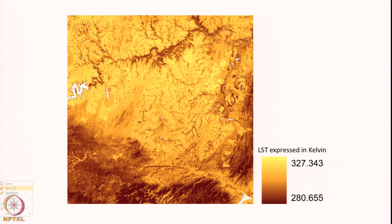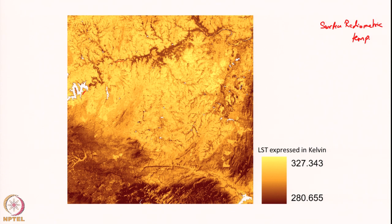The thermal infrared measurements from satellites are indeed complex: a mixture of signals from various objects, preventing us from calculating each individual object's temperature. Now we will see an example of how a land surface temperature image looks. Here we have an LST image — LST is land surface temperature, also known as surface radiometric temperature. This shows the temperature map of a small portion of South India, including the Kabini reservoir, Kabini river, and Kaveri river, covering parts of Karnataka, Tamil Nadu, and Kerala, including the Western Ghats mountains.